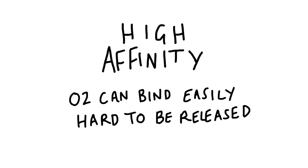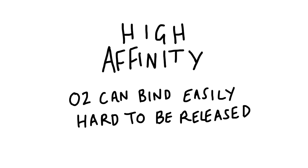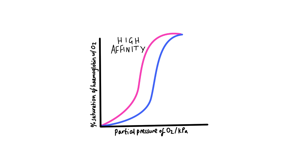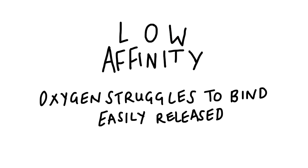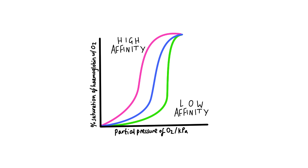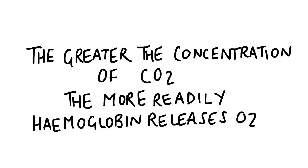To summarise: high affinity means oxygen binds easily and is difficult to release, and the dissociation curve shifts to the left. Low affinity means oxygen is difficult to bind but easy to release, and the dissociation curve shifts to the right. Hemoglobin has a low affinity for oxygen when it meets CO2.